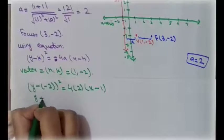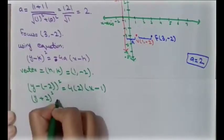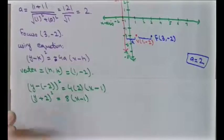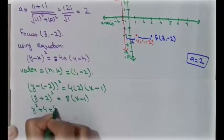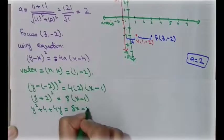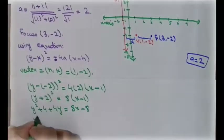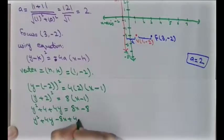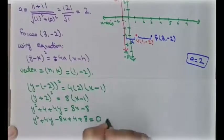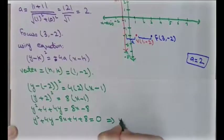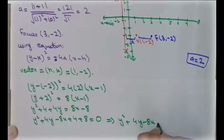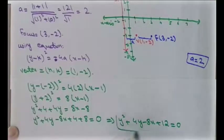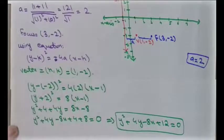Expanding: y² + 4y + 4 = 8x − 8. Rearranging: y² + 4y − 8x + 4 + 8 = 0, giving the final equation y² + 4y − 8x + 12 = 0. This is the required equation of the parabola.